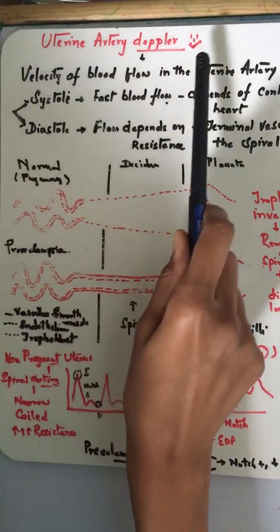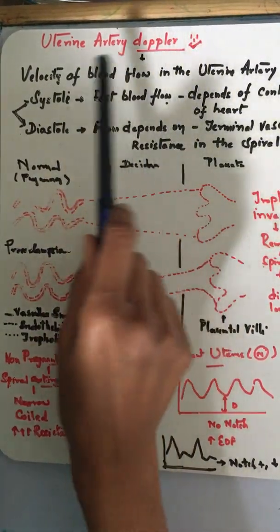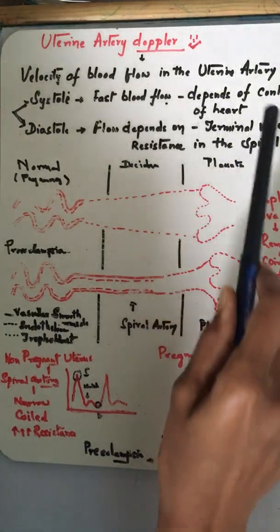Today we'll be discussing uterine artery Doppler. It is the velocity of blood flow in the uterine artery.